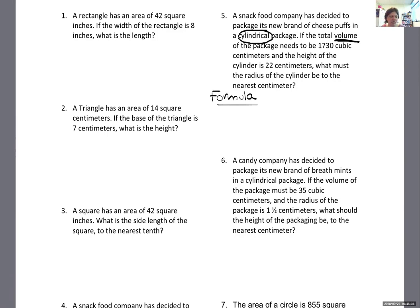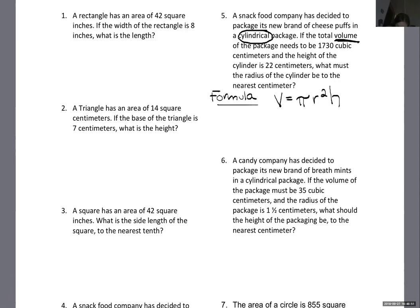Take a look at the formula sheet — make sure you give me the volume formula, not the surface area one. Volume starts with V. The volume of a cylinder formula is V equals pi R squared H.